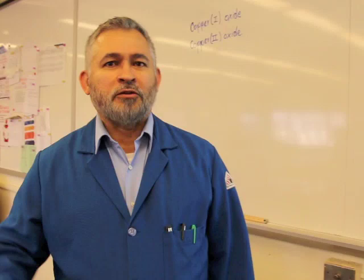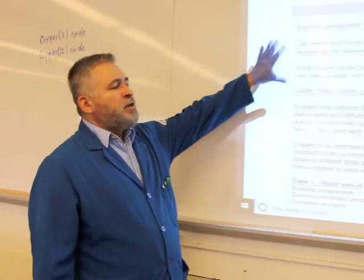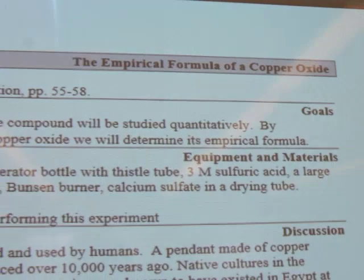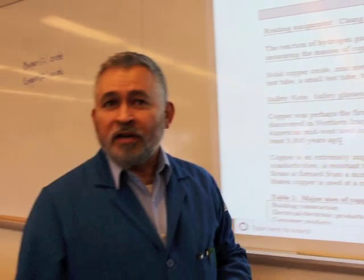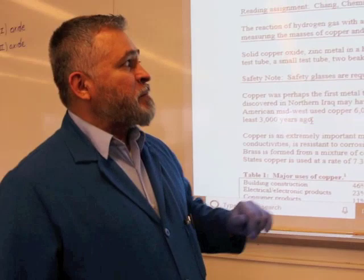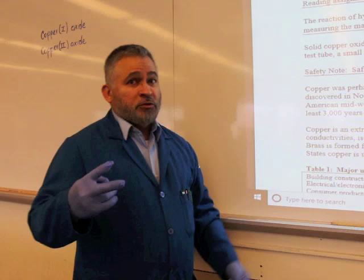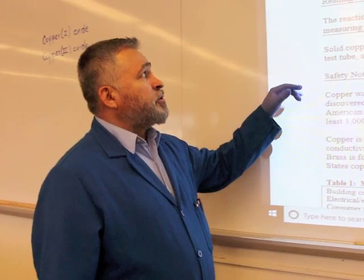You are going to do the actual demonstration for the experiment — three parts. First, we are going to follow the handout on the website. The experiment we are going to do is the empirical formula of a copper oxide. The objective is to find the empirical formula of a copper oxide. We have two options of copper oxide, and we are going to discuss that later.